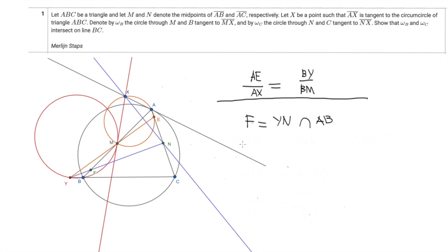So far we have directly constructed the red circle and the intersection point Y, and we proved that this circle is tangent to line XM. Now we do the same thing for point N and try to prove that the purple circle will pass through the same point Y. I will now draw line YN, which intersects AB at a point F.